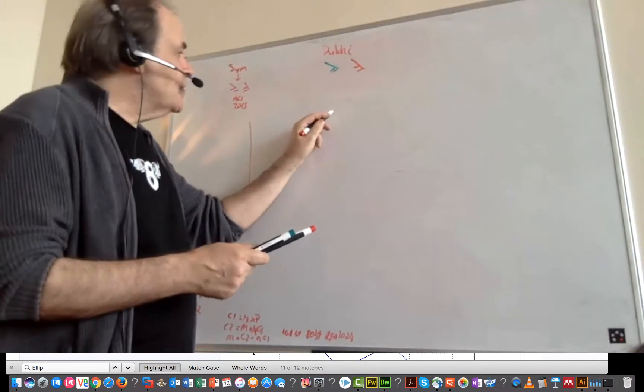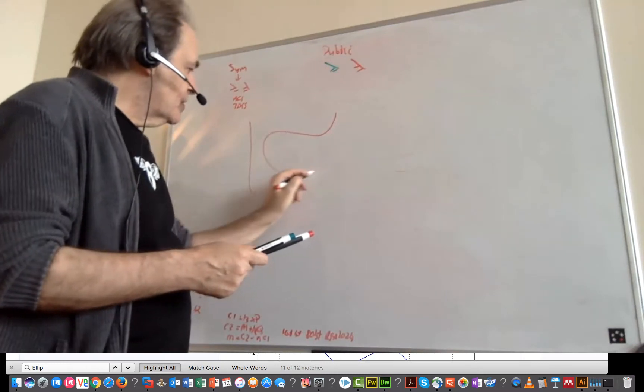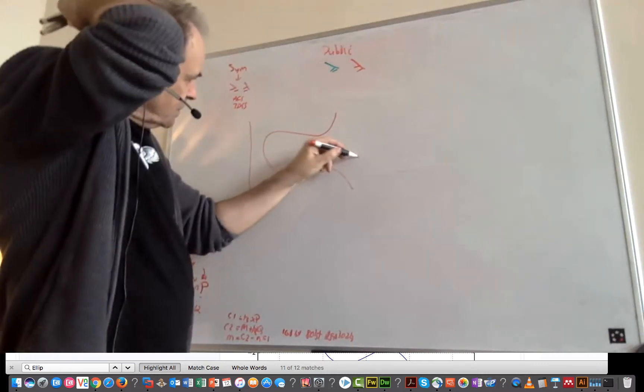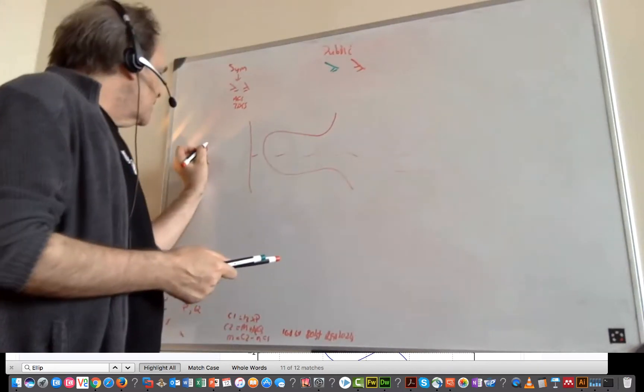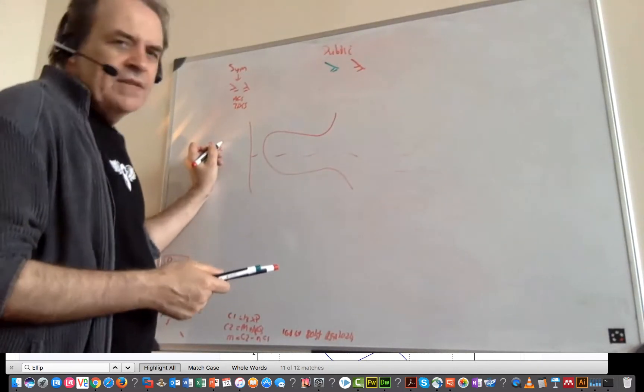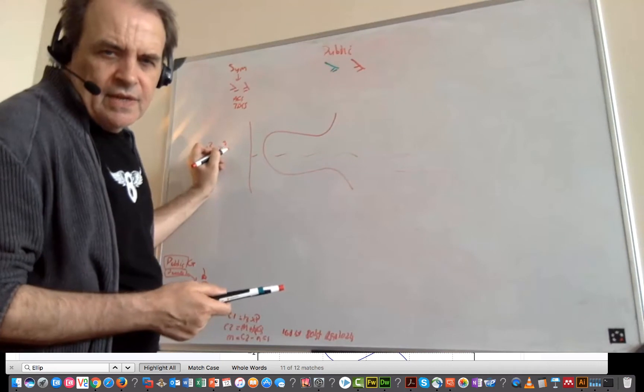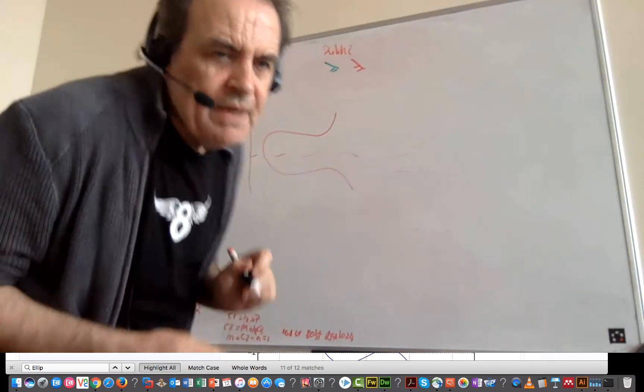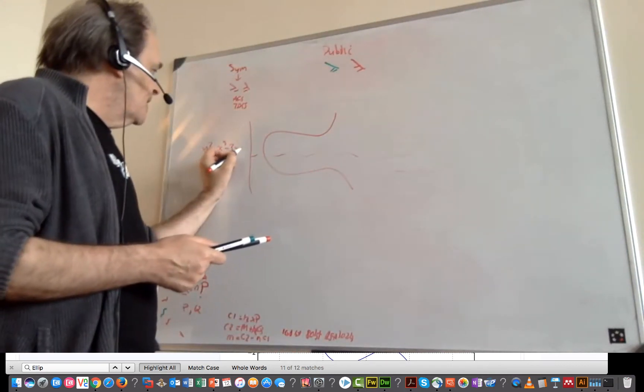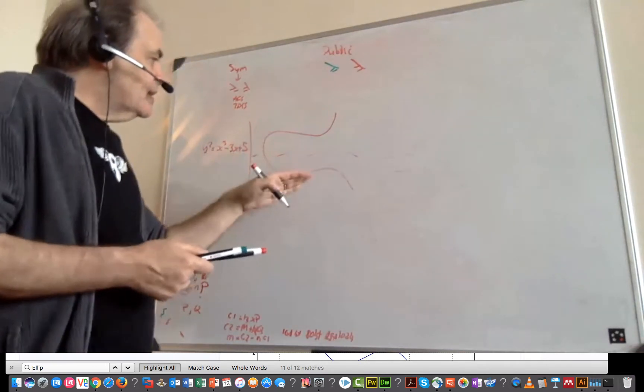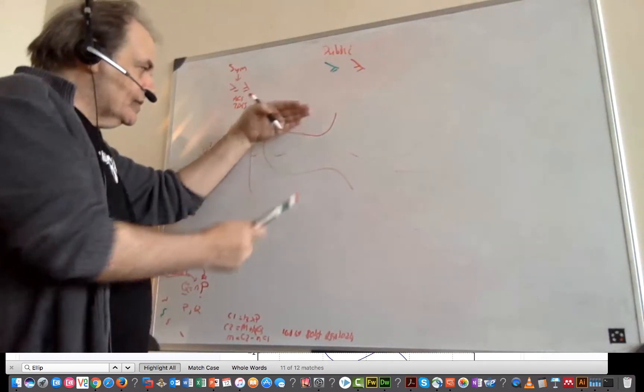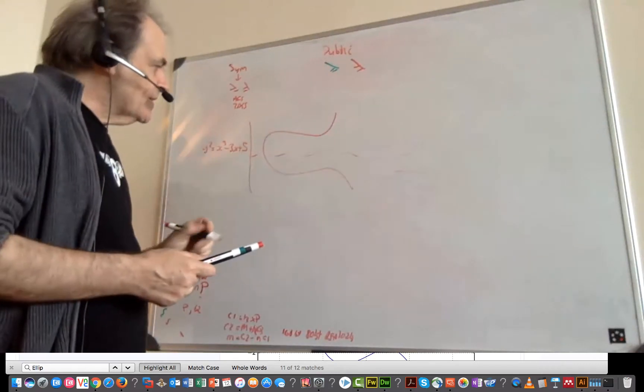So how does elliptic curve encryption actually work? Well, it has a function that looks like this. This is mathematically our function here. In this case, this is y squared equals x cubed plus minus 3x plus 5 gives us this. And this is symmetric across, mirror image across the x-axis here.